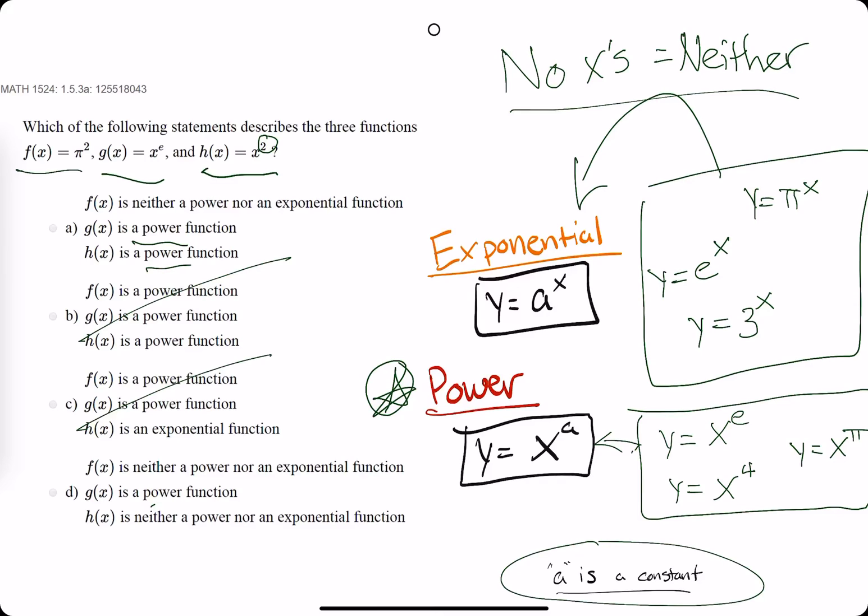So a is looking pretty good, but d is not because they say it's neither. So using our eraser, we find out that a is the correct answer. So here's the right answer.